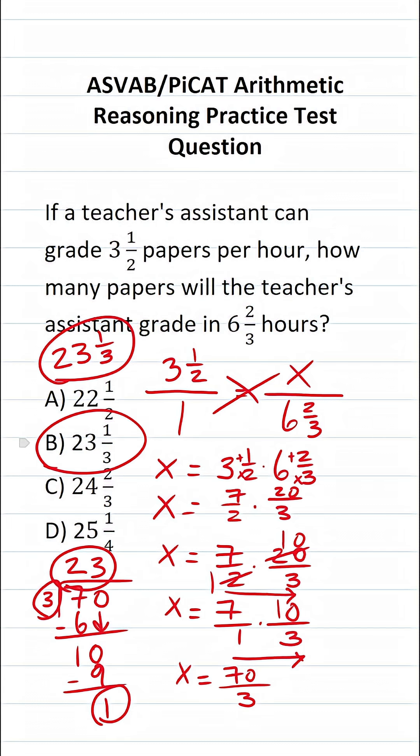So the answer to this one is B. It will take the TA six and two-thirds hours to grade 23 and one-third papers.